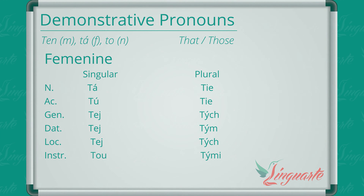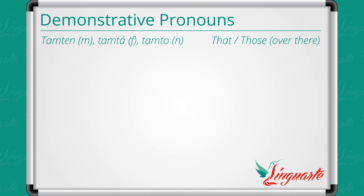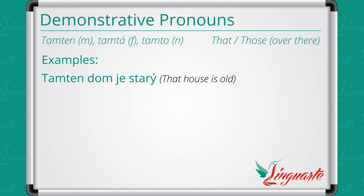Third type: Tamten — masculine, Tamta — feminine, Tamto — neutral. These pronouns are used for objects or people that are far away from the person speaking — corresponding to the English 'that' and 'those,' but over there. Examples: Tamten dom je starý. — That house is old. Tamta žena je moja suseda. — That woman is my neighbor. Tamto auto je drahé. — That car is expensive. You can find the forms in all the cases on screen.